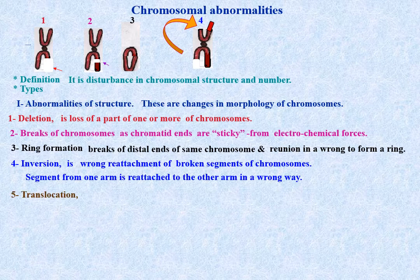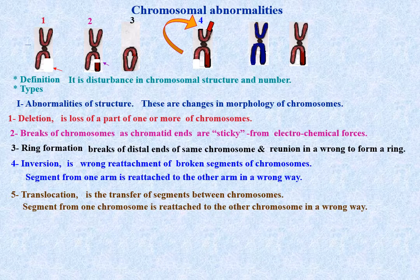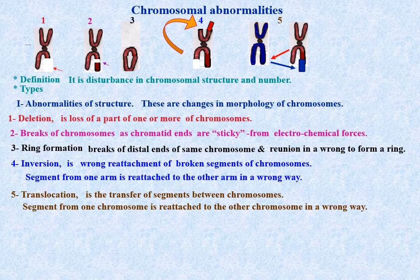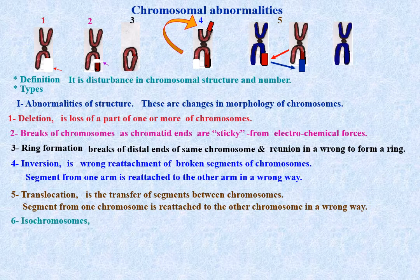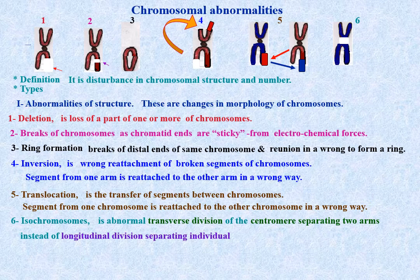Translocation is the transfer of segments between chromosomes, where a segment from one chromosome is reattached to another in the wrong way. Isochromosomes result from abnormal transverse division of the centromere, separating the two arms instead of the normal longitudinal division that separates individual chromatids.